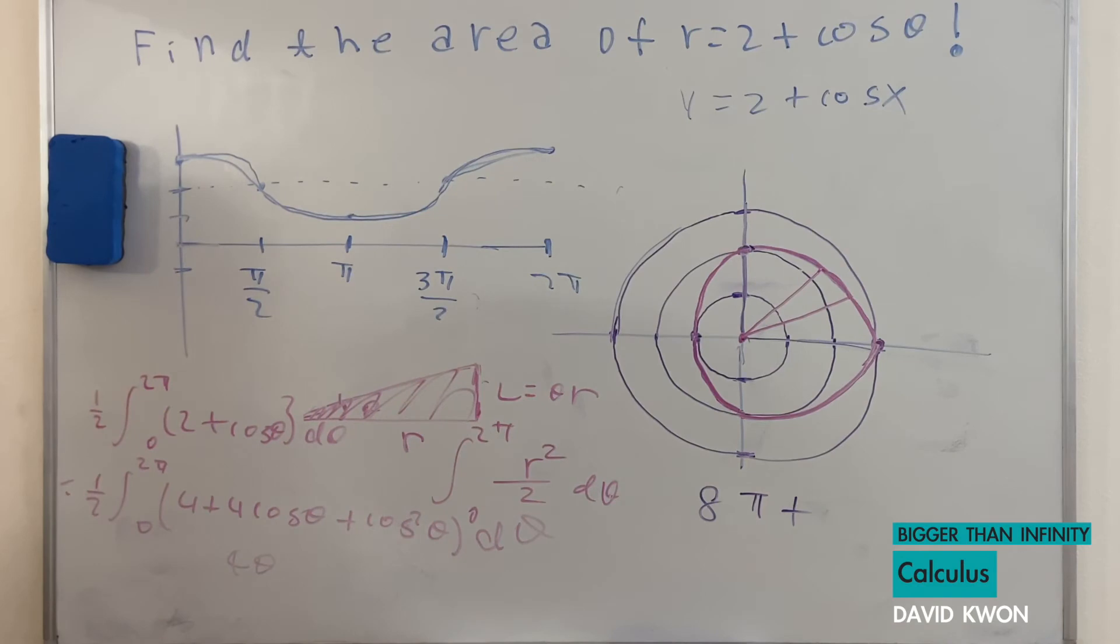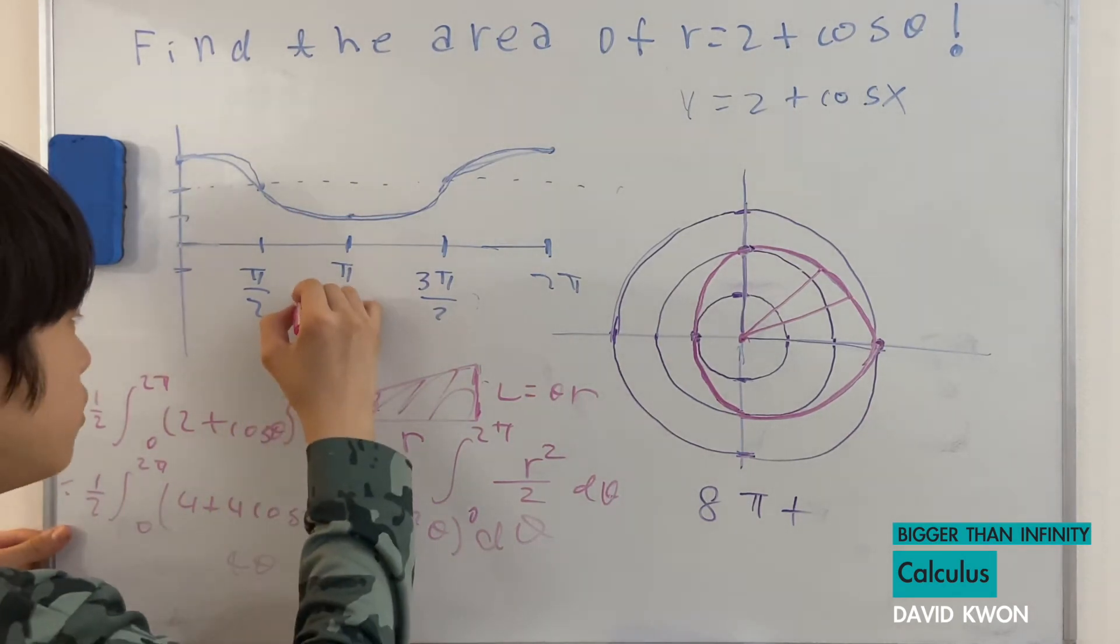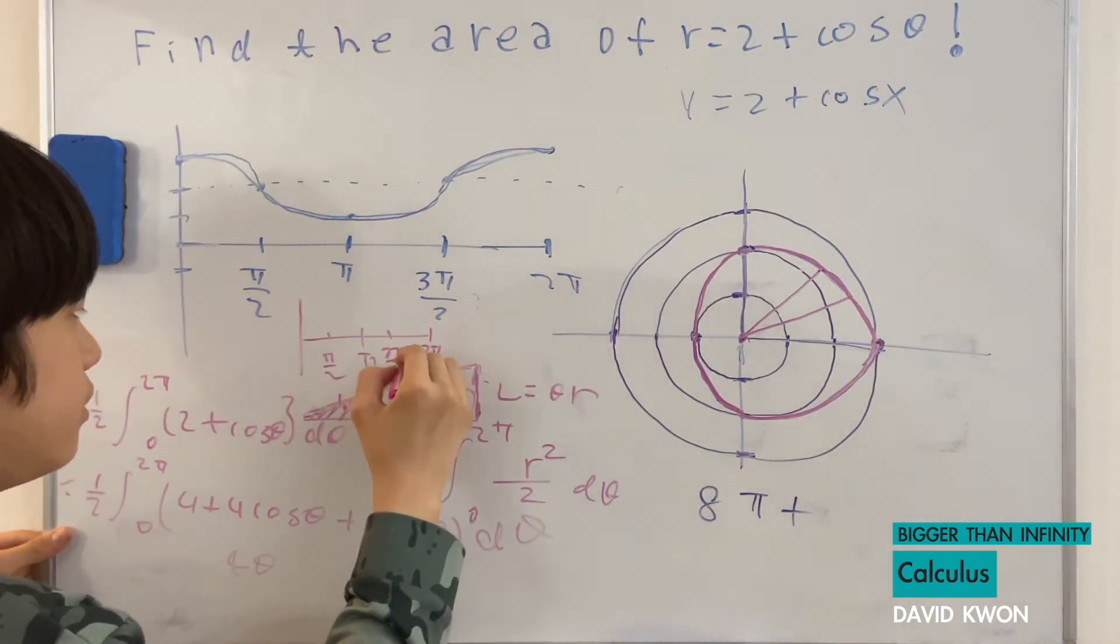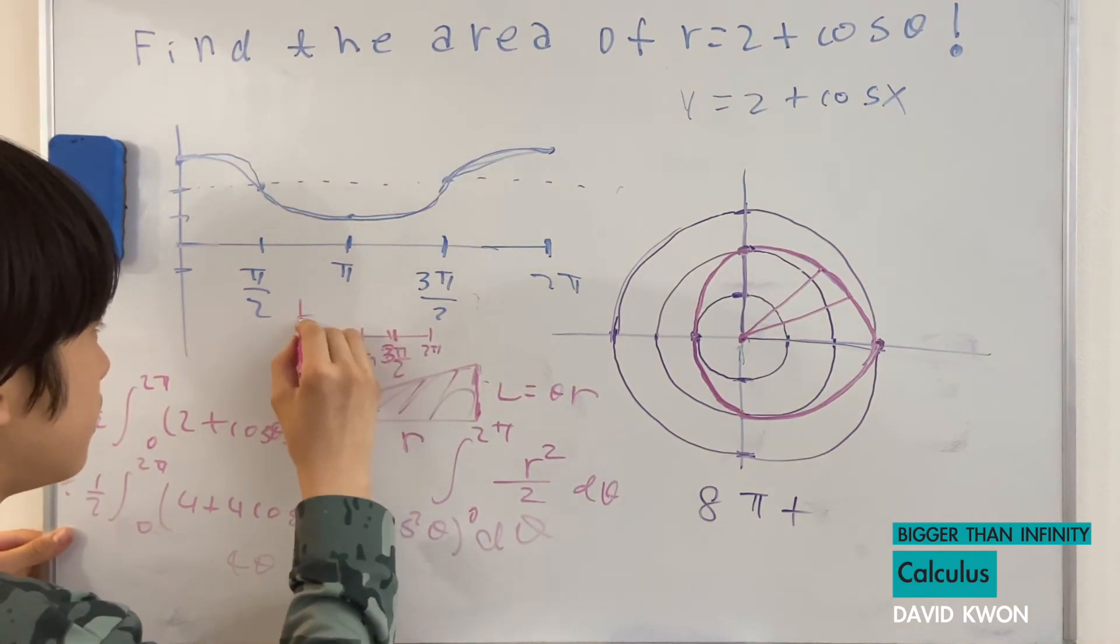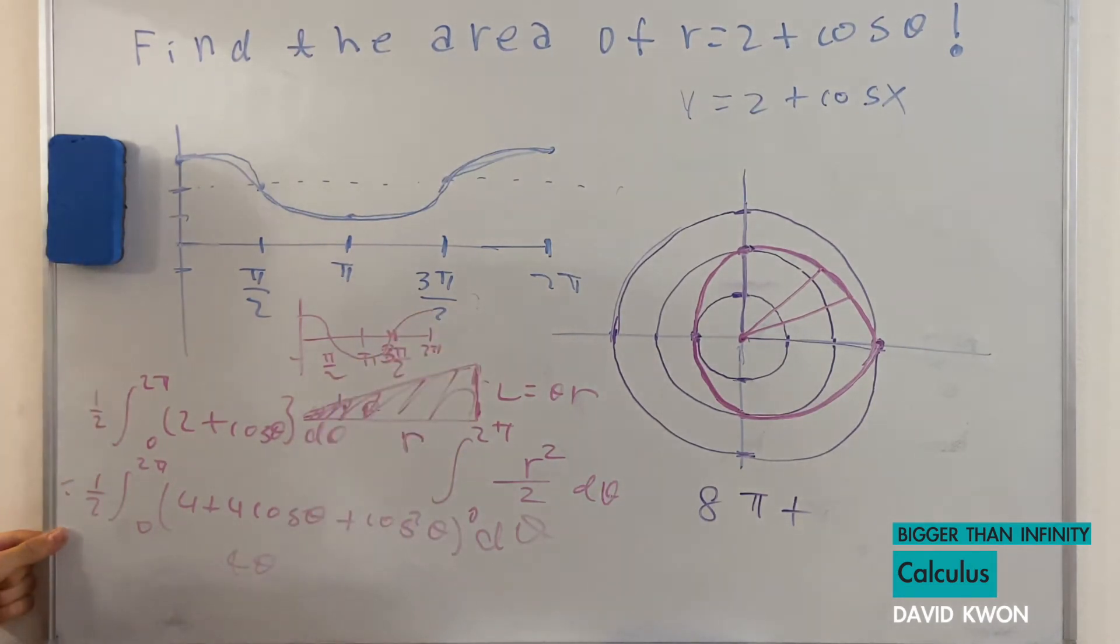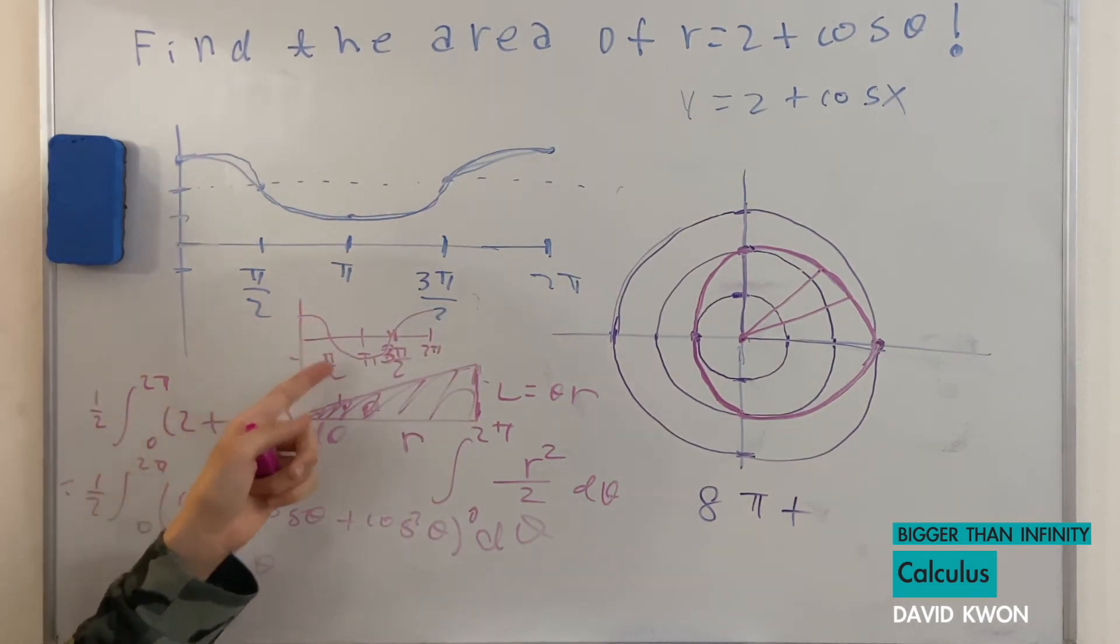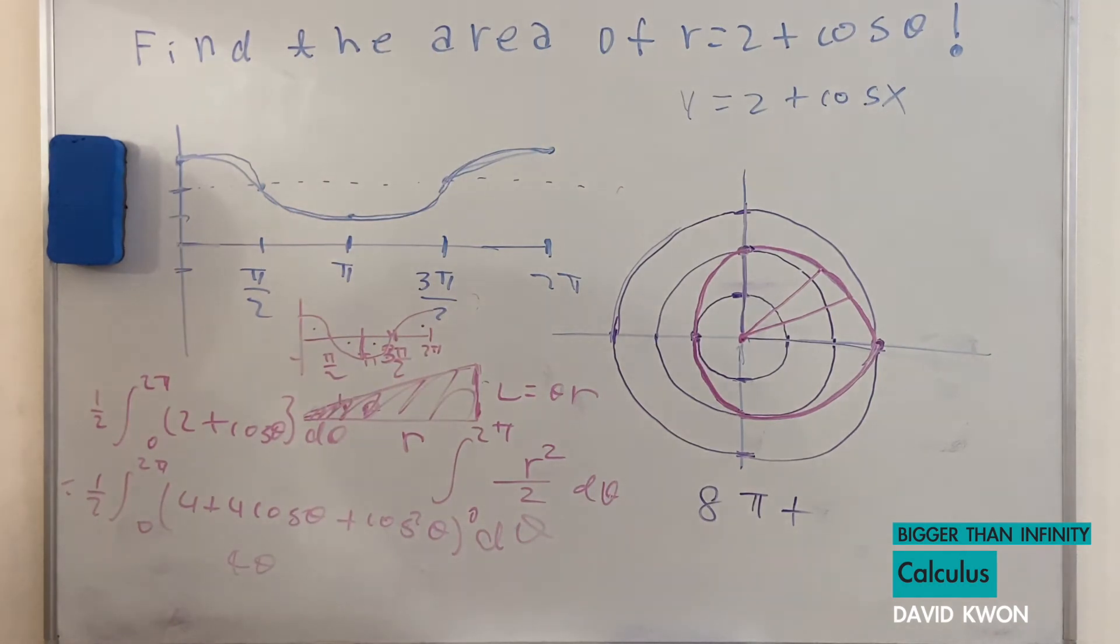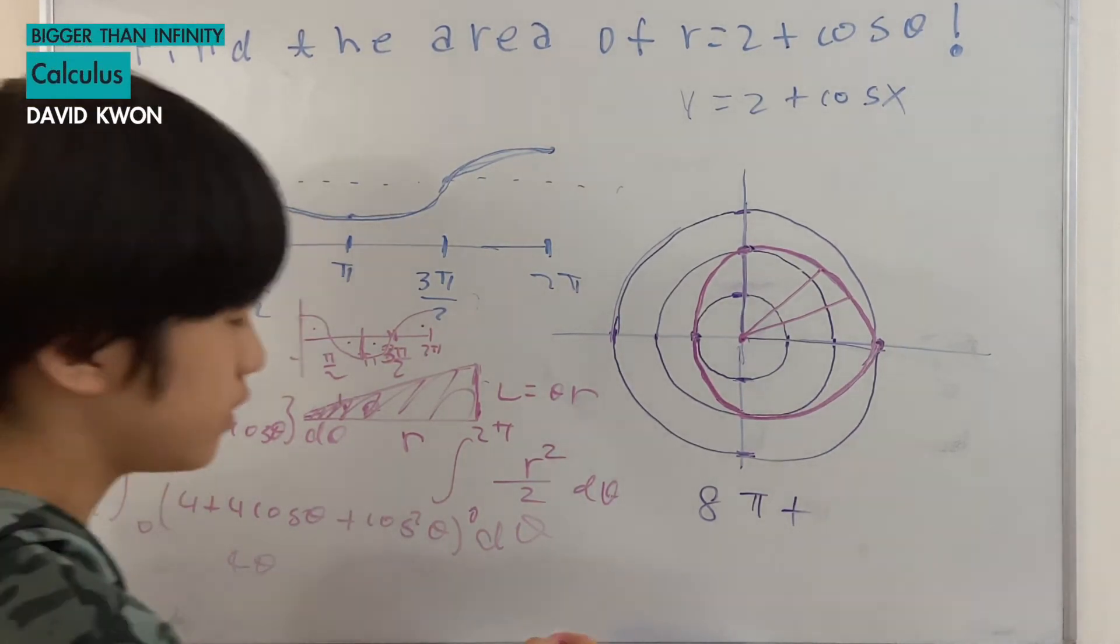So now we have 4 times cosine theta. If we have a graph of cosine, this is 2 pi, pi, pi over 2, 3 pi over 2. And I graph it, it looks like this. The area from 0 to 2 pi: cutting this like this, this area is the same thing as this, this area is the same thing as this, so it'll become zero. So from the integral from 0 to 2 pi of 4 times cosine theta, we know that the integral of cosine theta is zero, but zero times 4 is zero. So that's just plus zero.